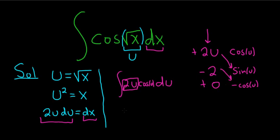So this is equal to 2u sine u. And then negative and negative here is positive. So it's plus 2 cosine u plus c.